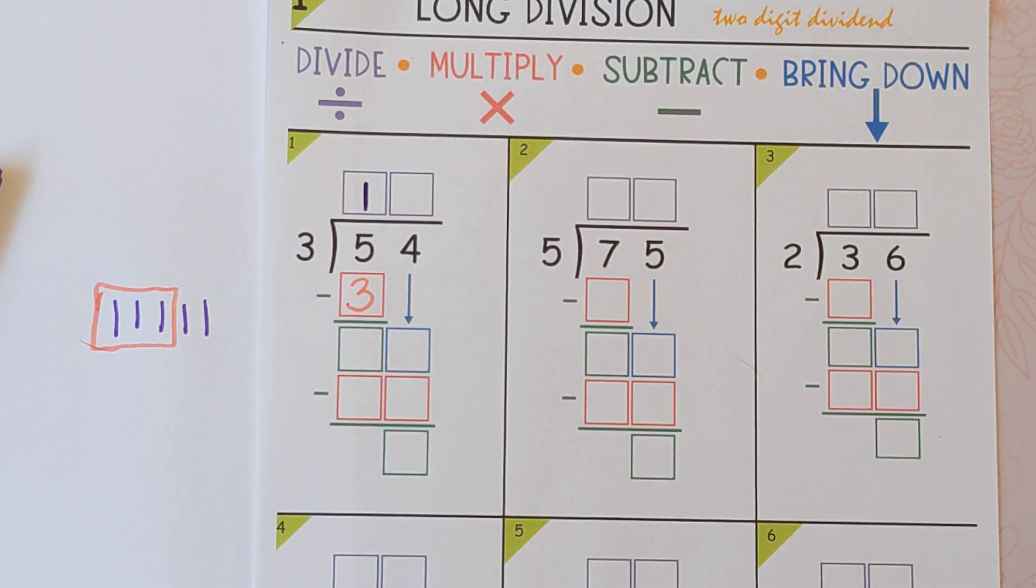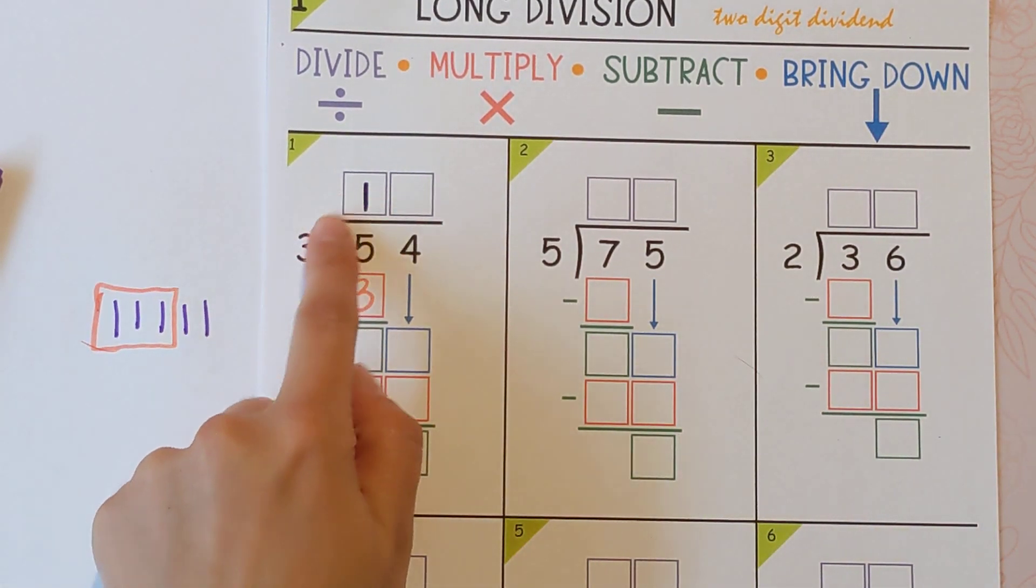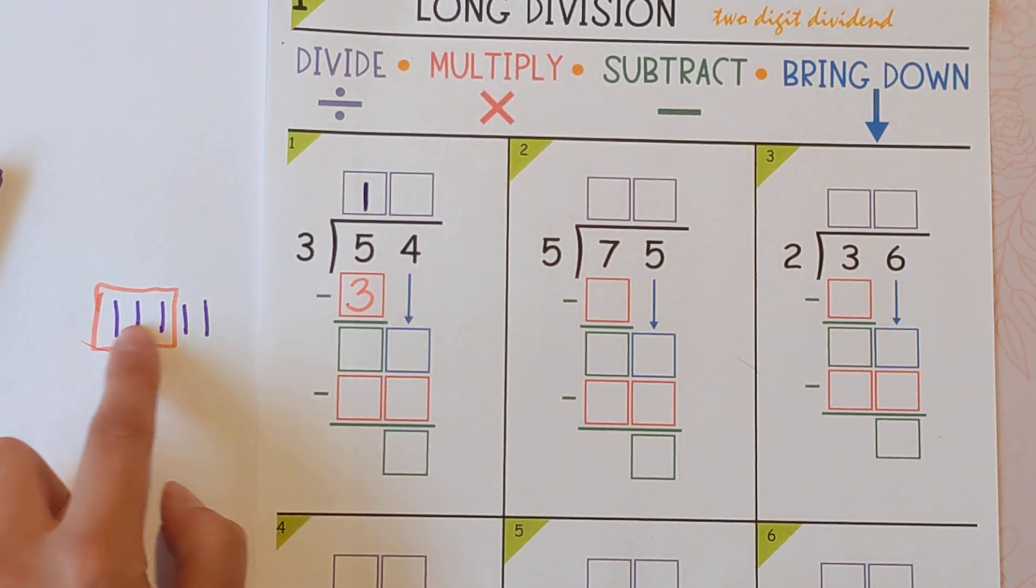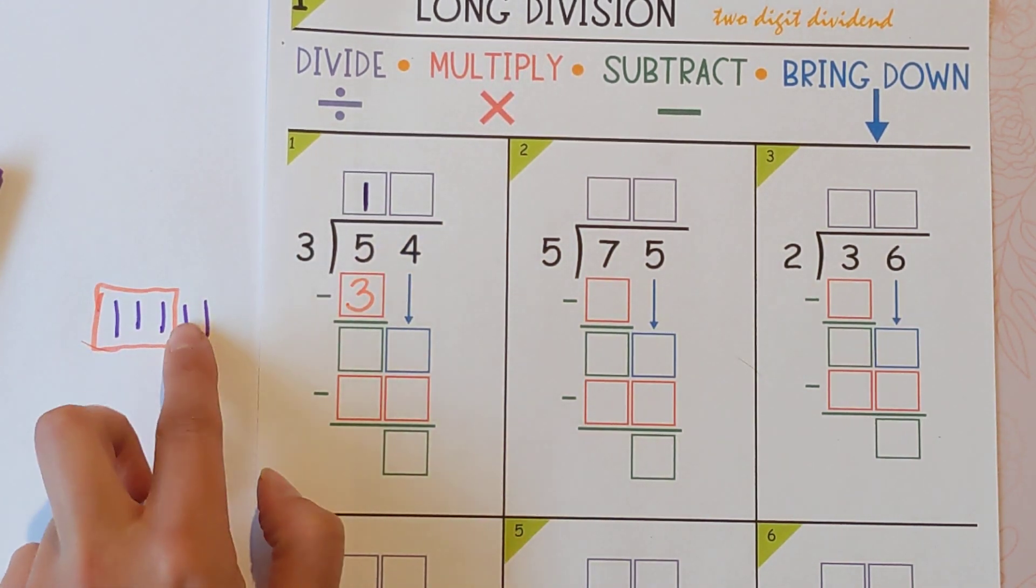We did that because we were saying, okay, well, three goes into five one time. How much did we use up? One times three, we used up three of them and we're trying to figure out how many are left over.